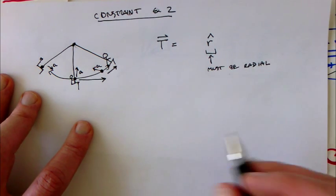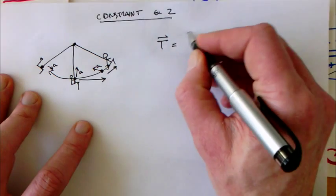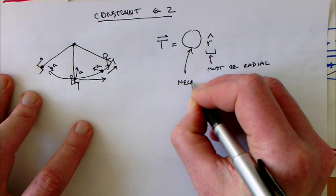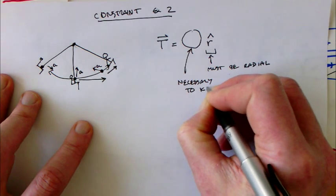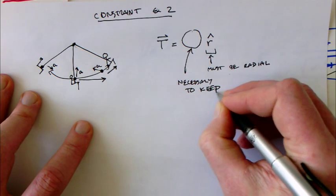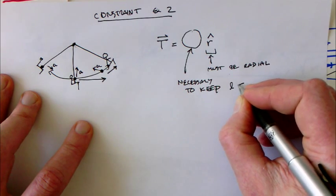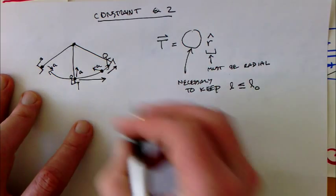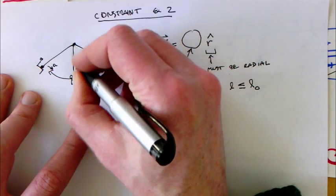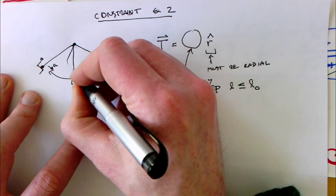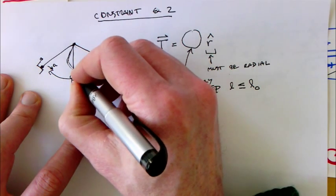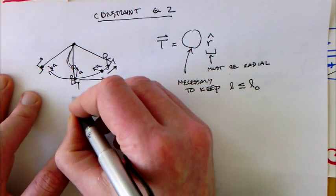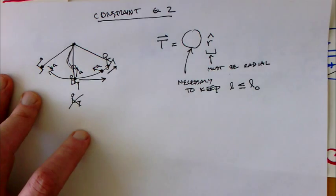The other thing is that the size of tension is whatever is necessary to keep the length of the string less than or equal to its rest length. Which is to say that tension would allow the kid to go up - you can imagine the rope bending and allowing the kid to be up here - but the rope is not going to allow the kid to be down here. This is not an option.